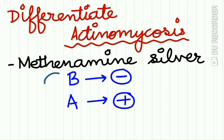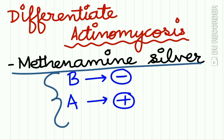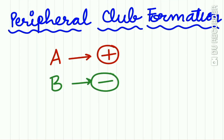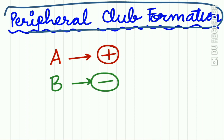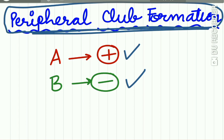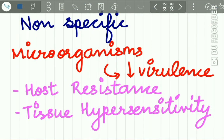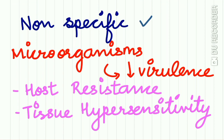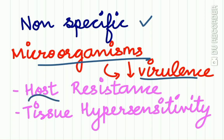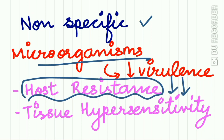Another differentiating point: peripheral club formation is a feature of actinomycosis but is not a feature of botryomycosis. Treatment of botryomycosis is non-specific. It is caused by a variety of microorganisms of low virulence, so host resistance comes into play. Whenever the host immunity goes down, botryomycosis may occur, and it is considered a tissue hypersensitivity reaction to the causative organism.